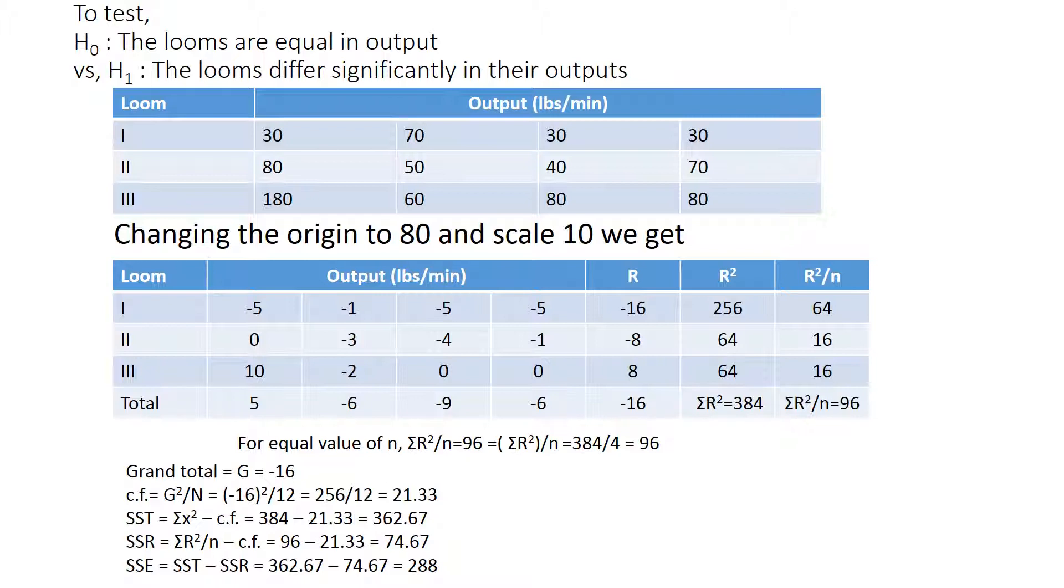SSR is summation of R squared by N, which is 96, minus 21.33, which is 74.67. Finally, SSE is SST minus SSR, which is 362.67 minus 74.67, that equals 288. So these are all the essential values we have got: SST, SSR, SSE, and N equals 12.